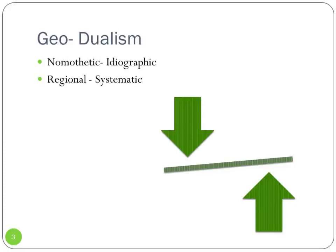The second dimension of dualism is regional and systematic. Regional means we study a small area or region in detail and then come to an understanding of the whole world. Systematic is the complete opposite — in the systematic approach, we try to understand the earth as a whole and then come down to the local areas or regions. Regional and systematic together form the second dual aspect of geography.